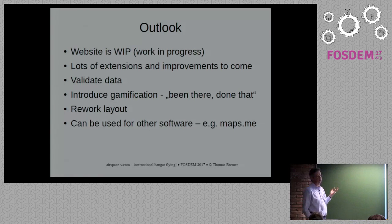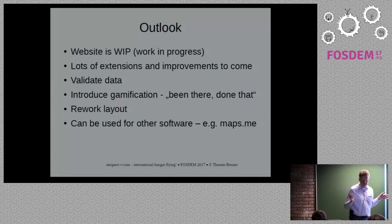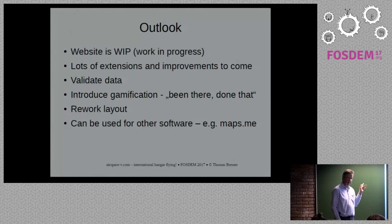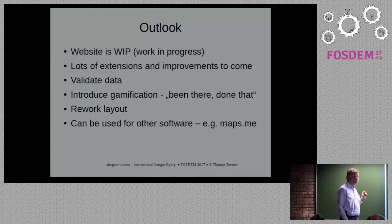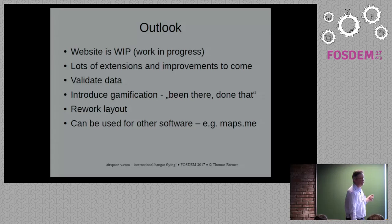Future plans include social network integration and gamification — a 'been there, done that' feature where you can mark airports you've visited, with some kind of ranking to attract visitors. The layout will also be reworked as it's currently suboptimal. The distance calculation and string search techniques presented here could also be applied in other software, such as maps.me, which seems slow when finding strings in its database.